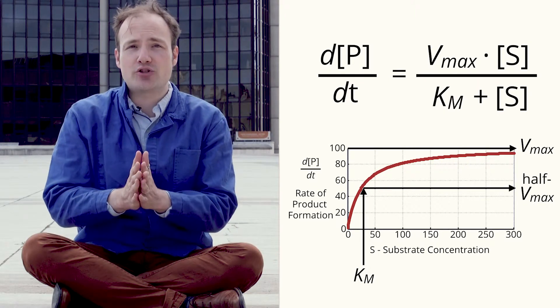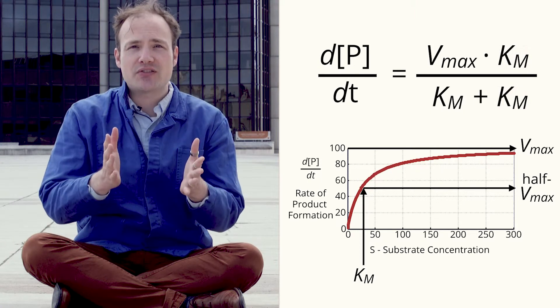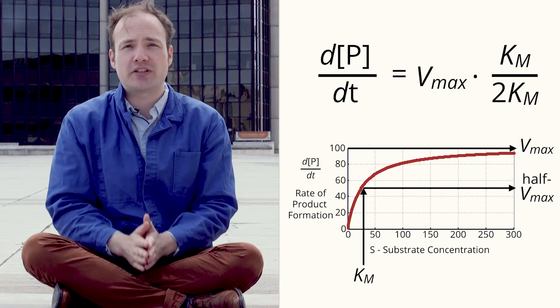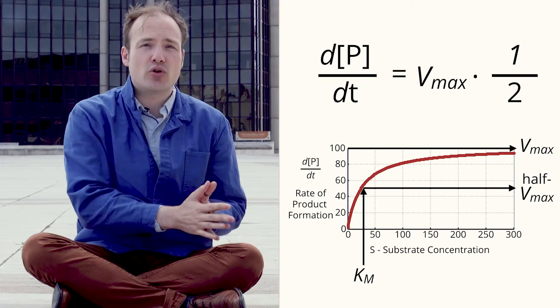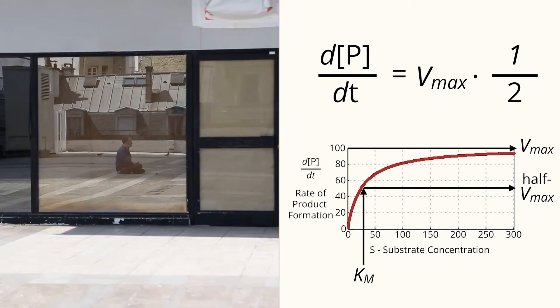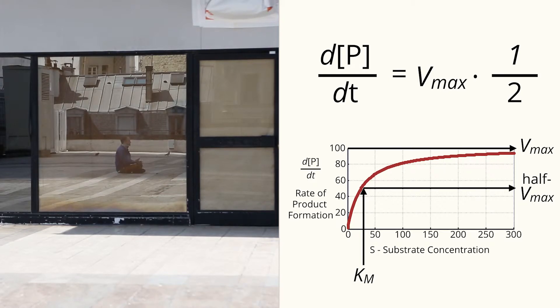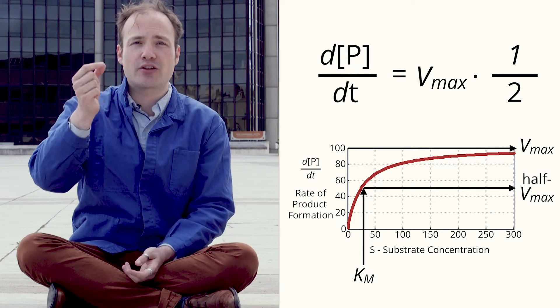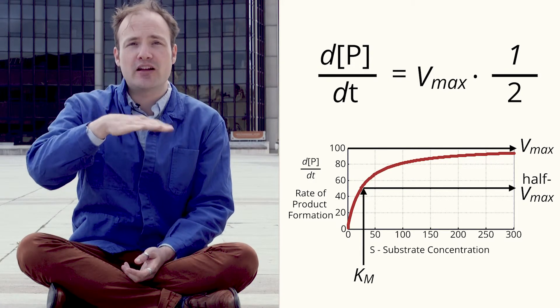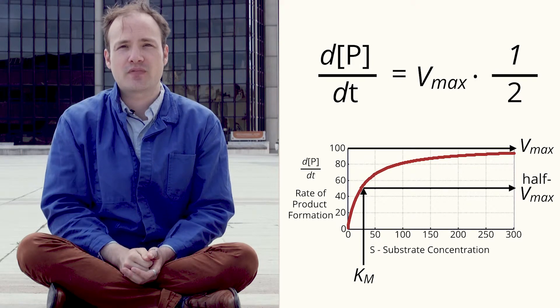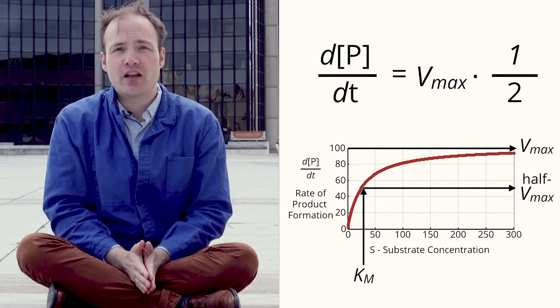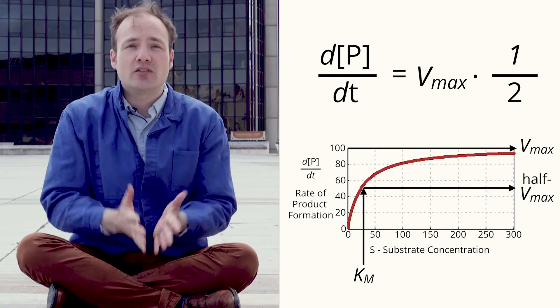We can also see it in the equation. When we set S, the substrate concentration equal to Km, the ratio comes to exactly one-half. When the substrate concentration is lower than Km, we say that the reaction is in the linear range, because the reaction rate increases roughly linearly with the substrate. When the substrate concentration is higher than Km, we say the reaction is saturated. Large increases in the substrate produce only small increases in the reaction rate.